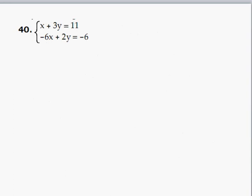Next, let's solve this system of equations. X plus 3Y is equal to 11 and negative 6X plus 2Y is equal to negative 6.